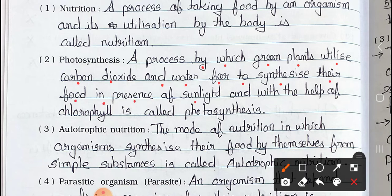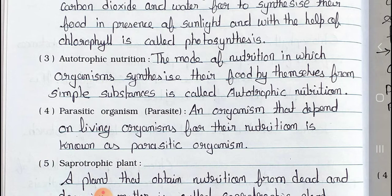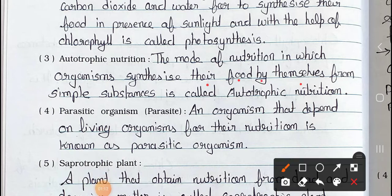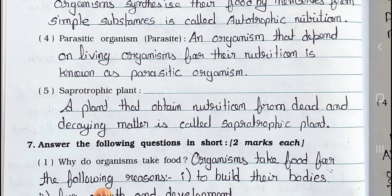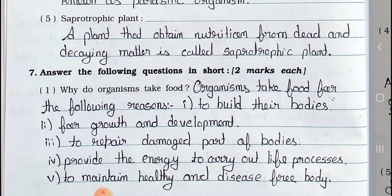Photosynthesis is performed in the presence of sunlight and with the help of chlorophyll. Number three: Autotrophic nutrition. Answer is the mode of nutrition in which organisms synthesize their food by themselves from simple substances is called autotrophic nutrition. Number four: Parasitic nutrition. An organism that depends on a living organism for its nutrition is known as a parasitic organism. Number five: Saprotrophic nutrition. A plant that obtains nutrition from dead and decaying matter is called a saprotrophic plant.